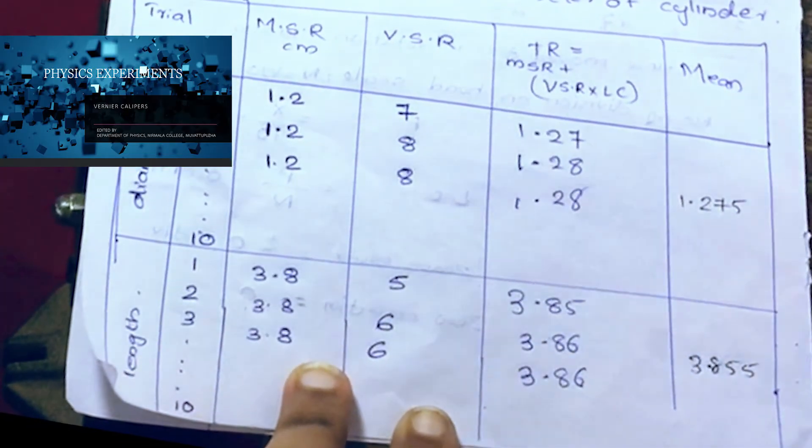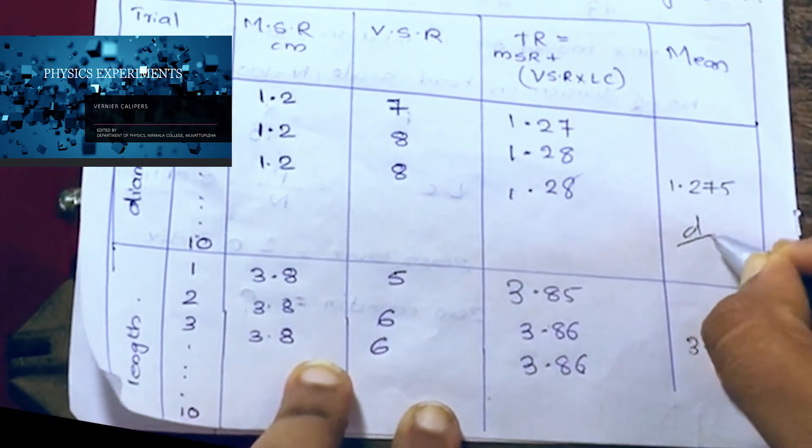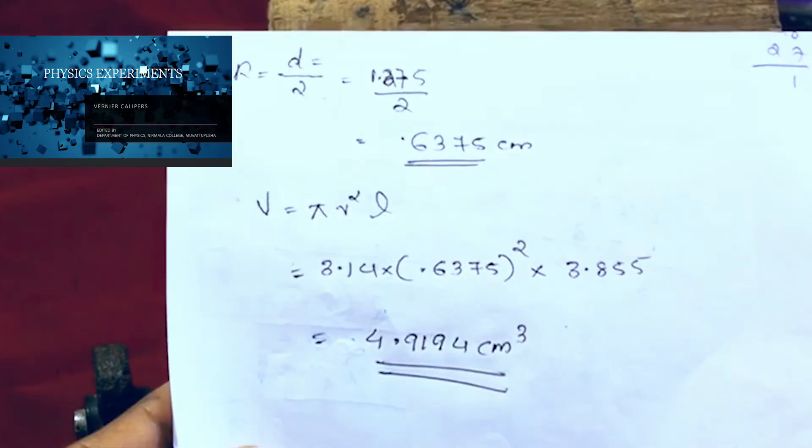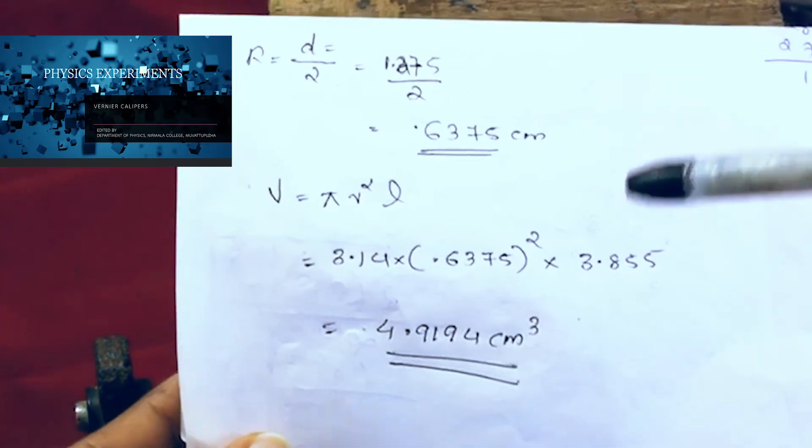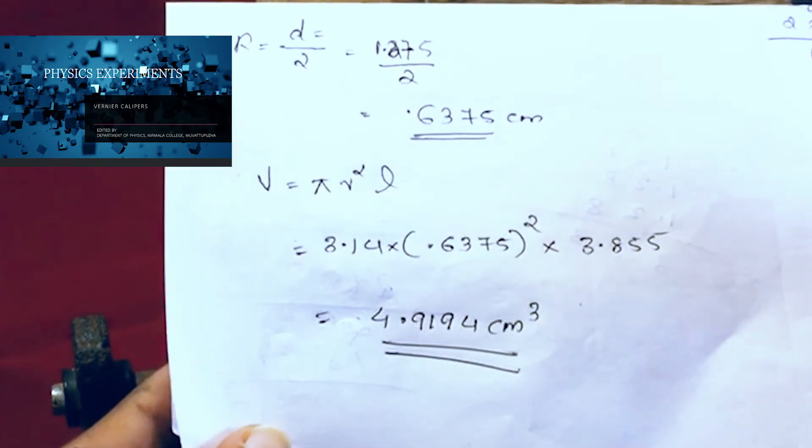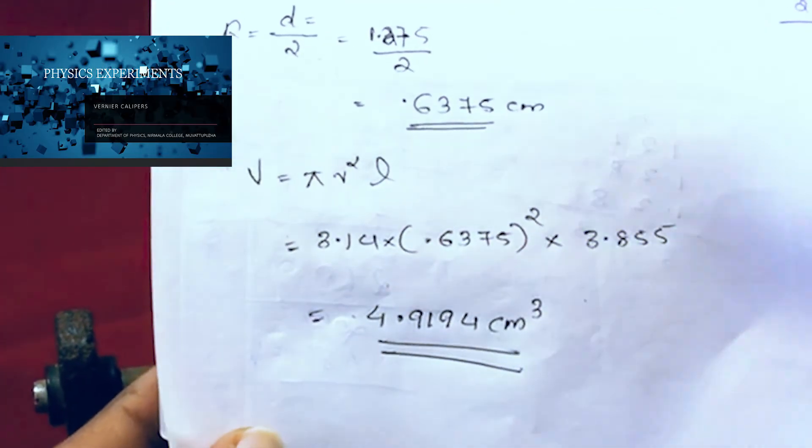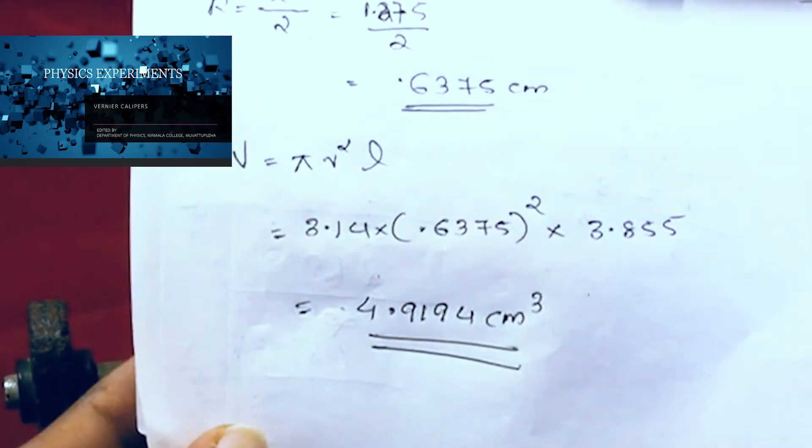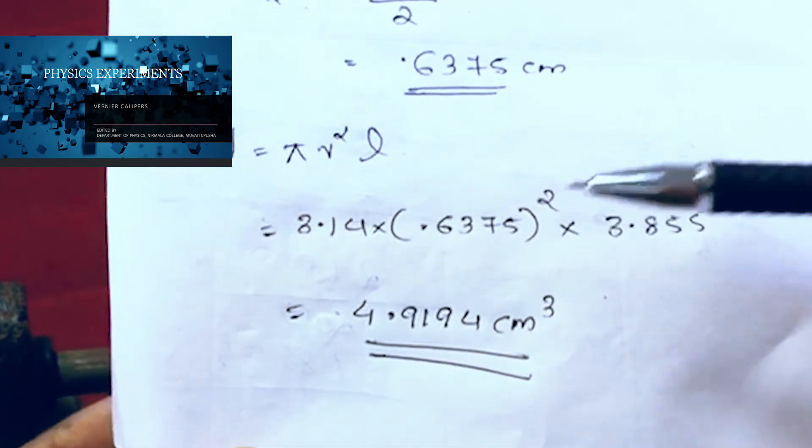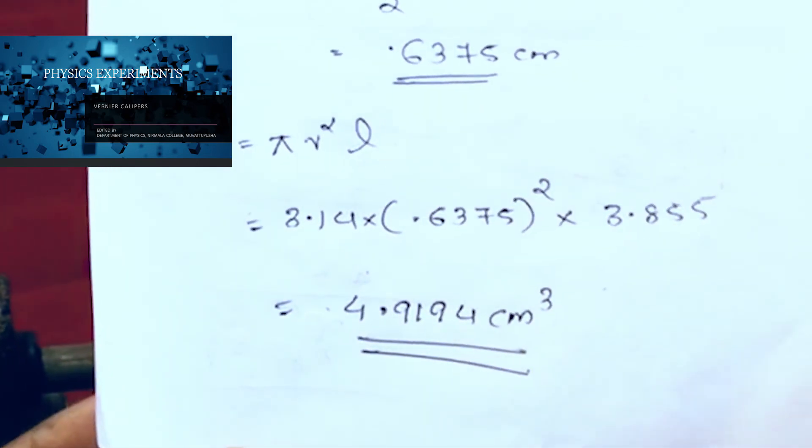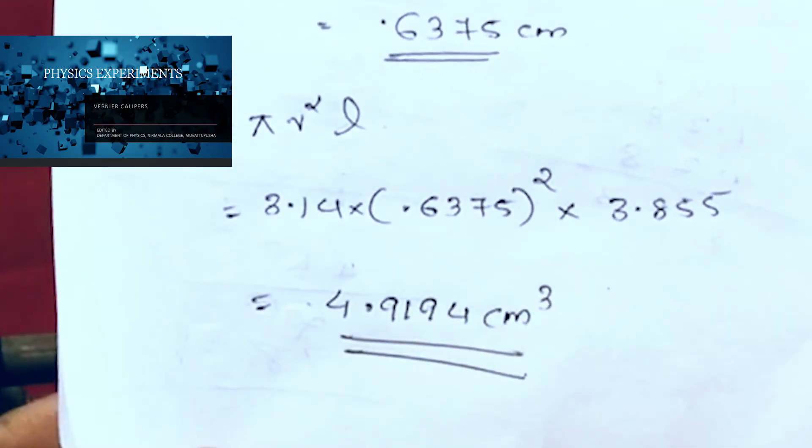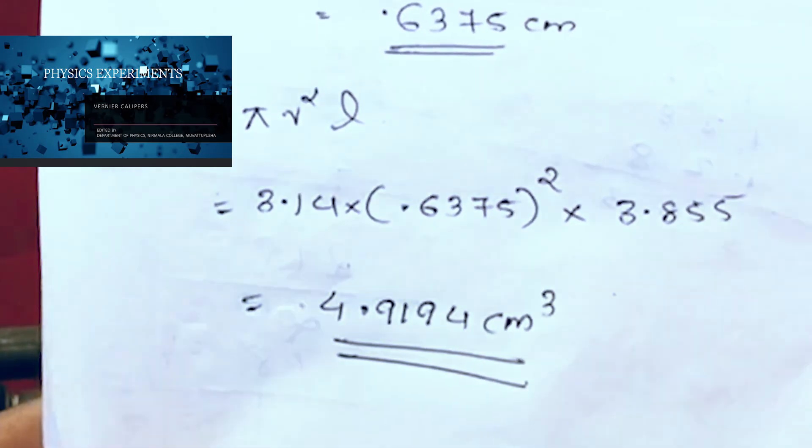Then diameter to radius - diameter by 2. So 3.14 into 0.675 the whole square into 3.855. We calculate 4.9194 centimeter cube as the volume of cylinder.